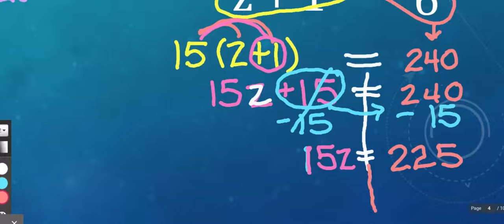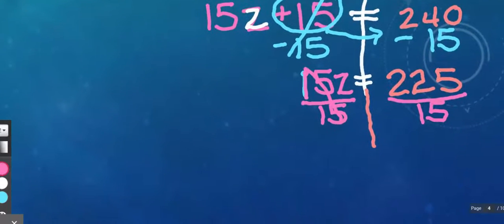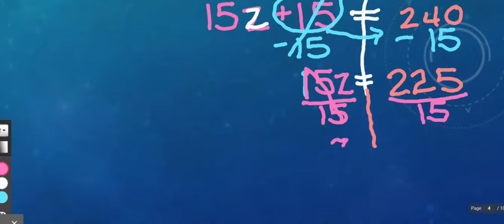And we aren't quite done yet. I'm going to extend my wall. Because Z is still being multiplied by 15. So to undo times 15, we would do the inverse, which is to divide by a positive 15. And if we do that on one side, we have to do that on both sides. Which leaves us with Z is equal to 225 divided by 15, which is 15. 15 times 15 is 225.